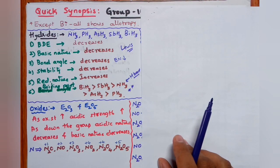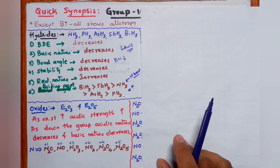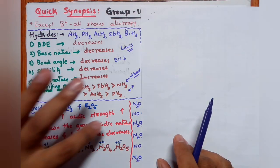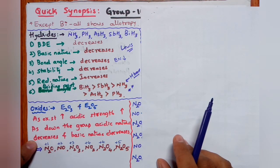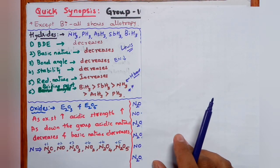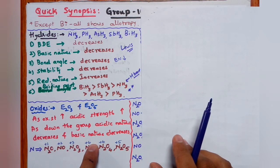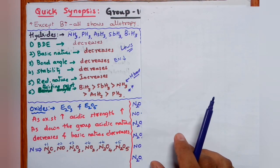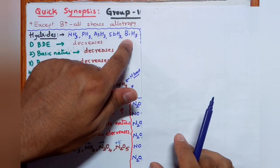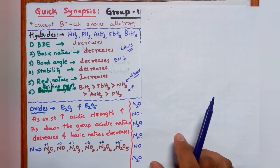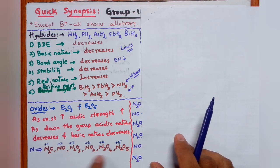For oxides of Group 15: E2O3 (oxidation state +3) and E2O5 (oxidation state +5). As oxidation state increases, acidic strength increases — this is a universal statement. Down the group, acidic nature decreases and basic nature increases because metallic nature increases. Bismuth is a metal, so its oxide is basic in nature.